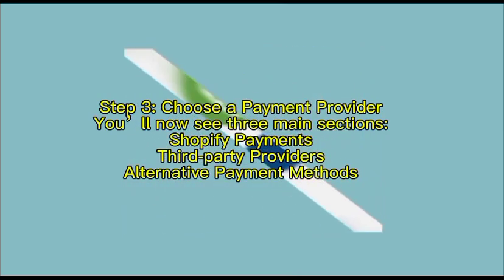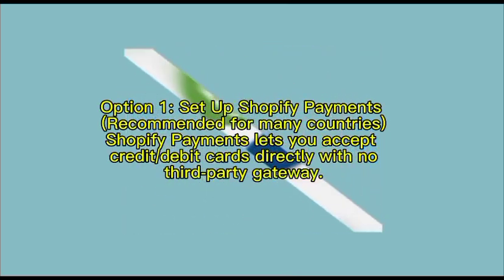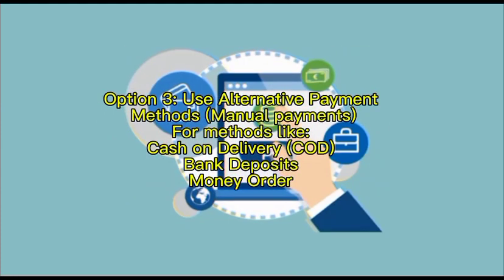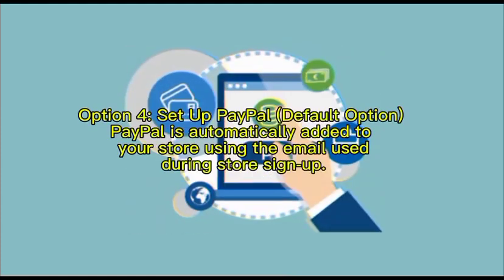Step number three: choose a payment provider. You will now see three main sections — Shopify Payments, third-party providers, and alternative payment methods. Option one: set up Shopify Payments, recommended for many countries — it lets you accept credit and debit cards directly with no third-party gateway. Option two: use a third-party provider like PayPal or Stripe if Shopify Payments is not supported in your country. Option three: use alternative payment methods like cash on delivery, bank deposit, or money order.